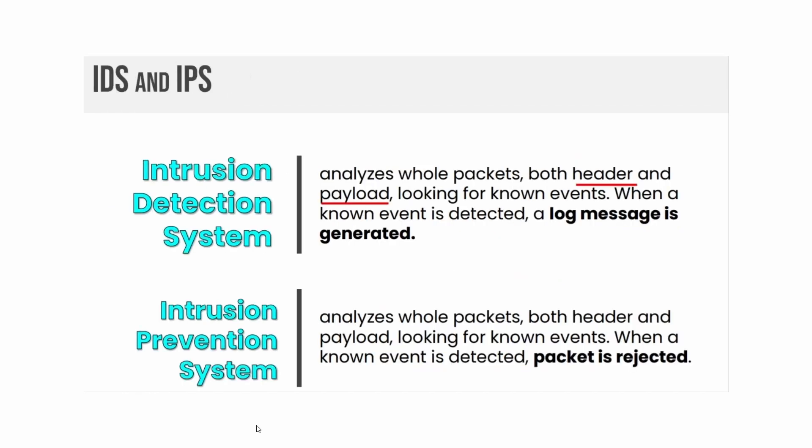Intrusion detection systems analyze whole packets, both header and payload, looking for known events. When a known event is detected, a log message is generated. Intrusion prevention systems also analyze whole packets, both header and payload, looking for known events. However, when a known event is detected by an IPS, packets are rejected.